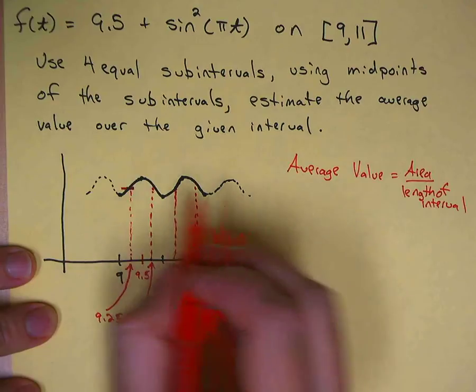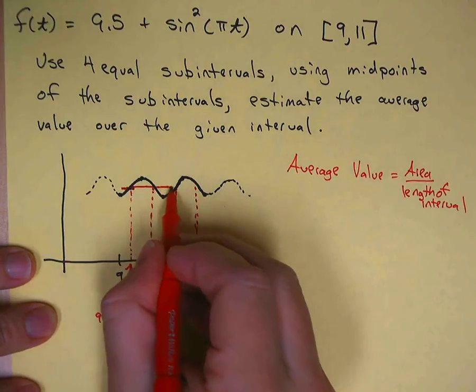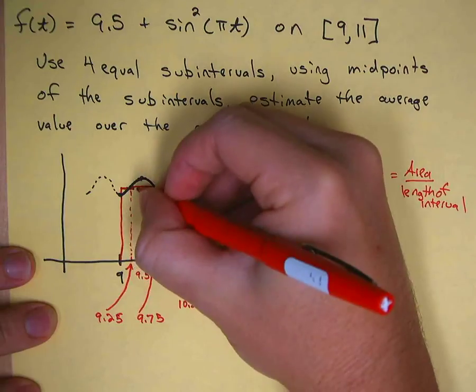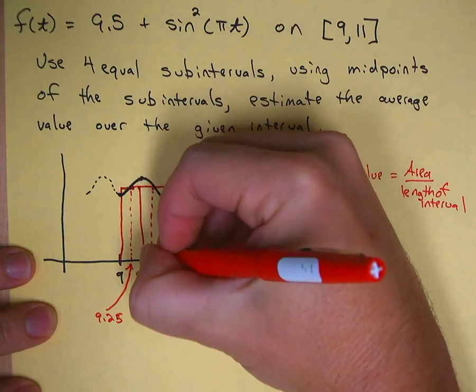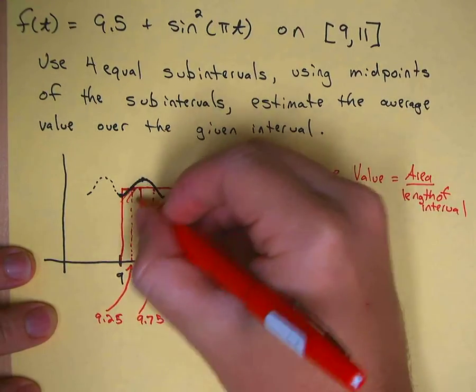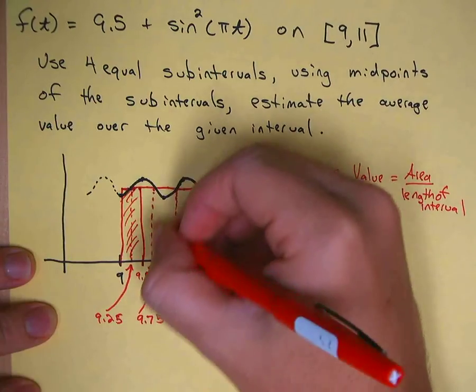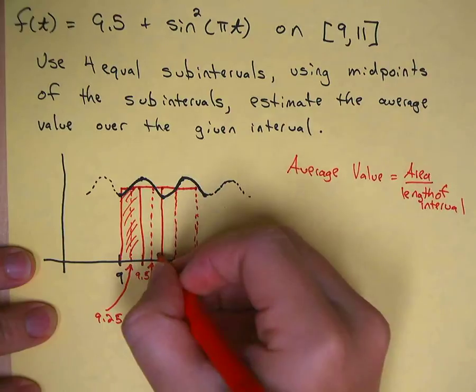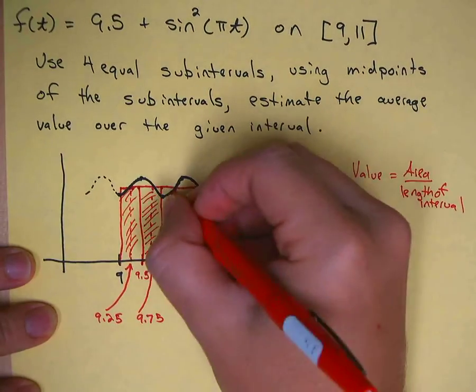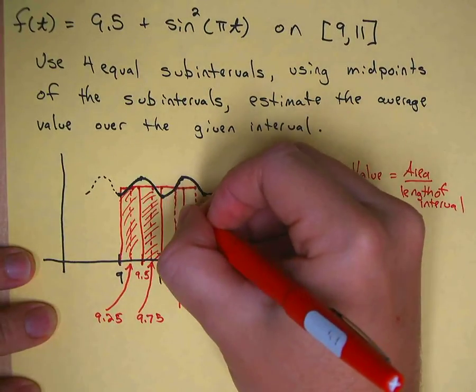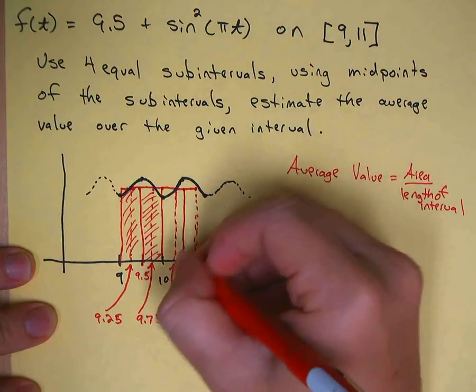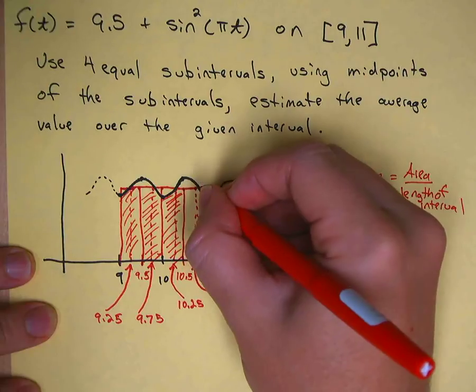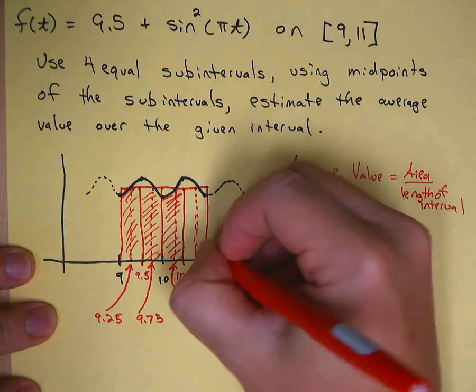So I'll make these little rectangles here. Notice they're all about the same height. Here's our first rectangle, there's the second rectangle area, and I'm going ahead and drawing them the same height because they actually are going to be the same height, and we'll find that out in a second.